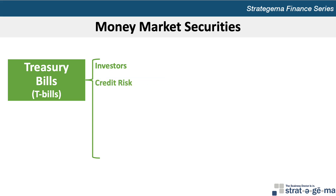Treasury bills are attractive to investors because they're backed by the federal government and therefore are virtually free of credit or default risk. Another attractive feature of T-bills is their liquidity, which is due to their short-term maturity and strong secondary market. The par value — the amount received by investors at maturity — is $1,000 and multiples of $1,000. Because T-bills do not pay interest, they're sold at a discount from par value, and the gain to the investor holding a T-bill until maturity is the difference between the par value and the price paid.